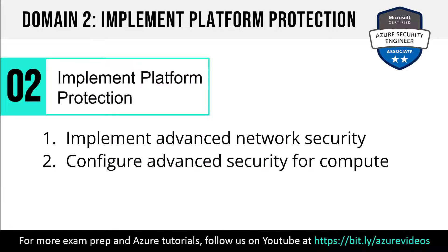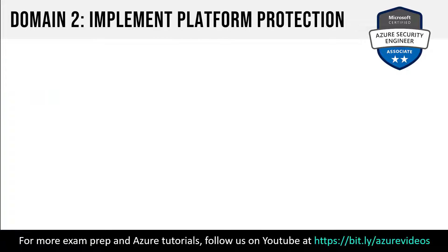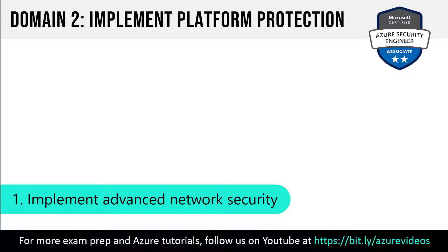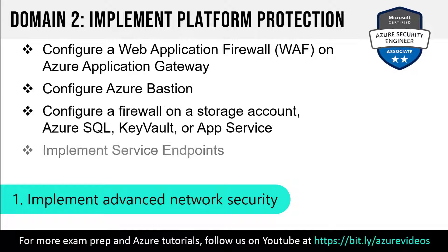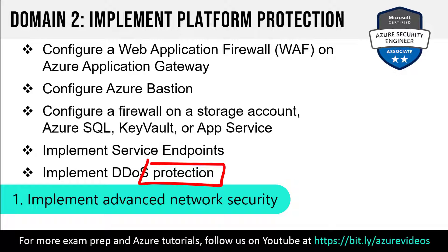Under implement platform protection, there are only two subdomains: one related to network security and the other to advanced security for compute. The minor change in verbiage was under implement advanced network security — and you're going to laugh when you see this. The skill tested before September was 'implement DDoS,' referring to the Azure DDoS service. It's now 'DDoS protection.' I really think this is largely wordsmithing. If we say 'implement DDoS,' that could be misconstrued, so I think this is wordsmithing you don't need to worry much about.